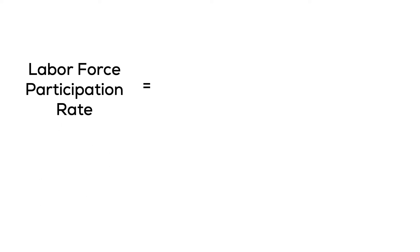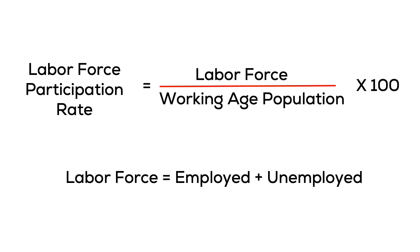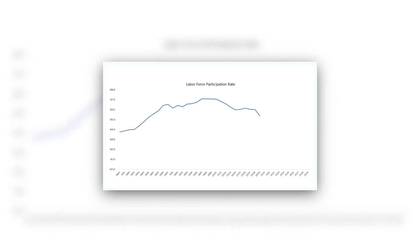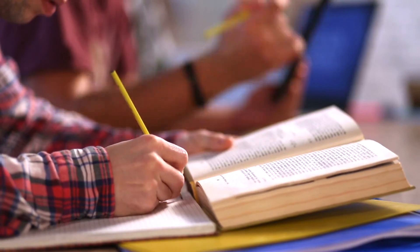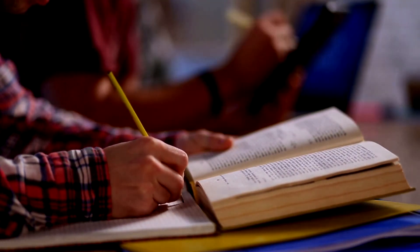Another measure that the BLS provides is the labor force participation rate. It measures the labor force as a fraction of the working age population, and is calculated by dividing the labor force by the working age population and then multiplying it by 100. The past 30 years of data shows us that the labor force participation rate hovers around 63%. During recessions, the labor force participation rate falls as more people exit the labor market and shift towards education or other activities.